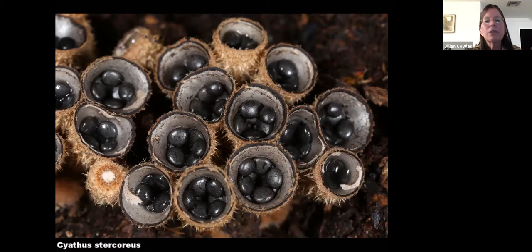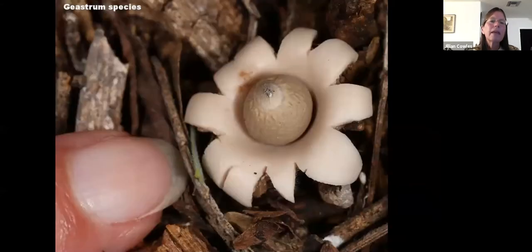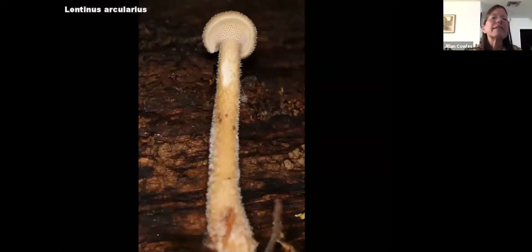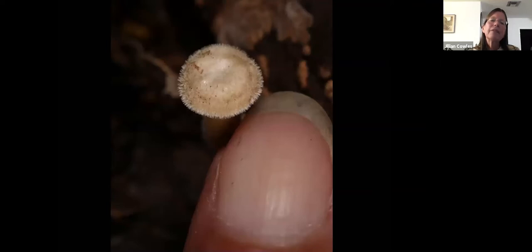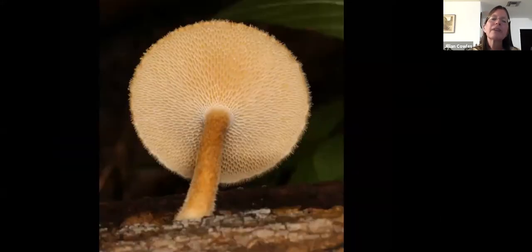Cyathus stercoreus is found all over the place — pretty ubiquitous — usually in association with manure. I've also seen them where very old decomposing cattle manure has been sitting out. This beautiful dainty little Geastrum was in our low elevation mesquite bosque — I had no idea these existed there. This is a really neat one: Lentinula. It starts out with a really tall stem relative to a very small cap, and then a few days later the cap has grown into the stem. If you look at the underside of that Lentinula it's a beautiful network of pores.